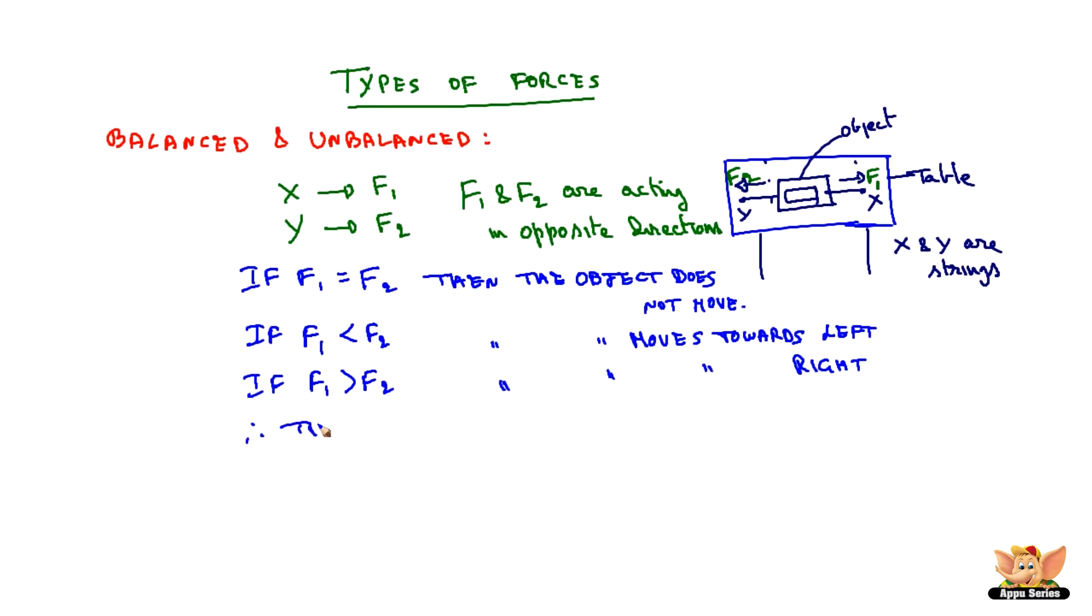So in this case we see that the object moves in the direction of the greater force. So we describe the balanced force as where the body does not move, where F1 is equal to F2. When F1 is equal to F2, then it is called balanced force.